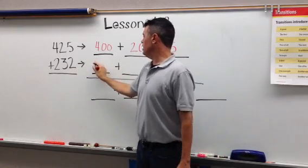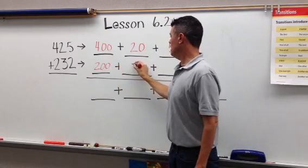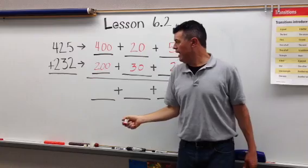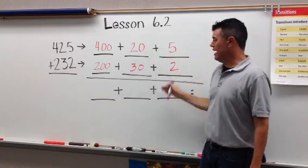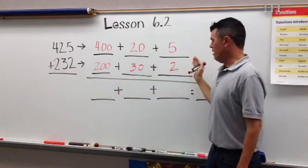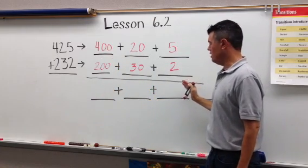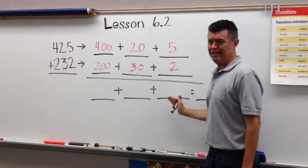232 will be 200 plus 30 plus 2. And then you just go and you do the sums on all of these. We were starting from the left in the hundreds. I would actually start, if you can think to remind them, start on the right tonight and start with the ones,